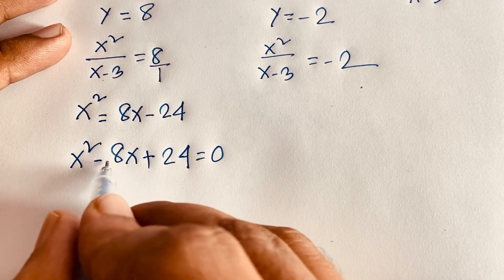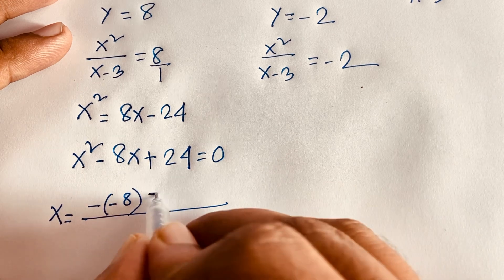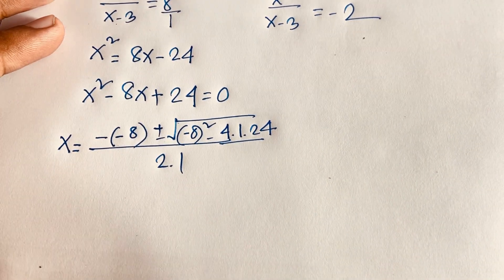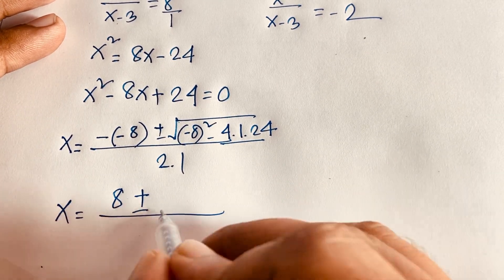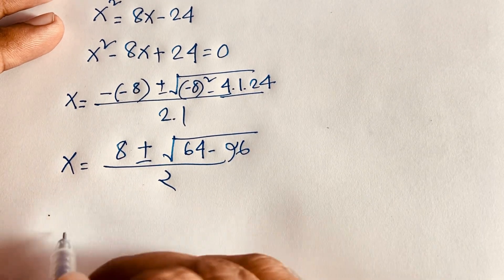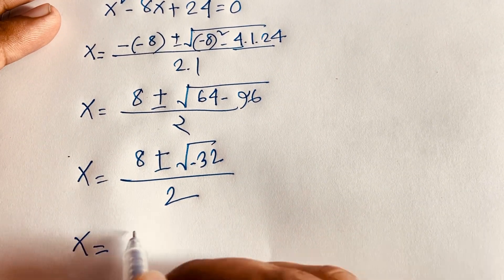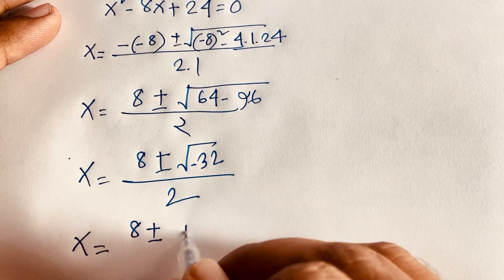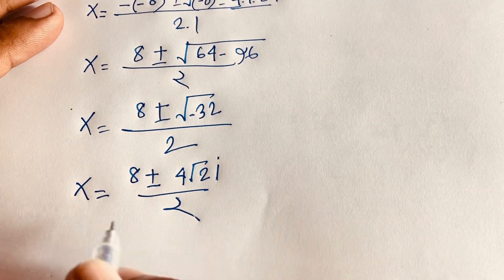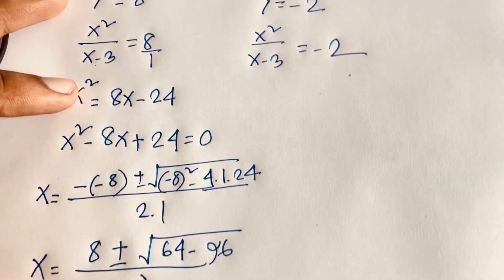For x² - 8x + 24 = 0: a = 1, b = -8, c = 24. Using the quadratic formula, x = (8 ± √(64 - 96)) / 2 = (8 ± √(-32)) / 2. Since √(-32) = 4√2 · i, we get x = 4 ± 2√2·i. This is a complex solution.